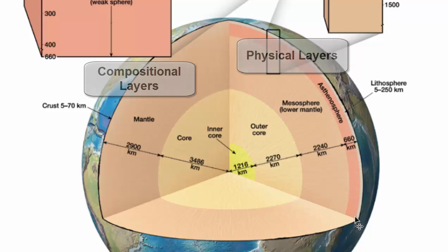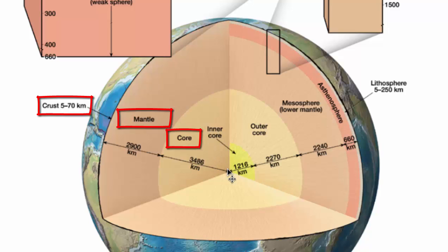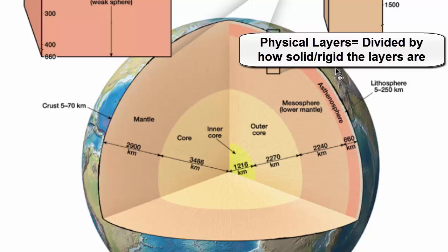We'll discuss the difference between them in a minute. For reference, here's our crust — the thin border on the outside — our mantle, and then our core that runs toward the middle. The physical layers do not precisely match up with the compositional layers. They're called physical layers because they differ in their strength or rigidity — some are very strong and rigid, others are weak and putty-like, and one is totally liquid.